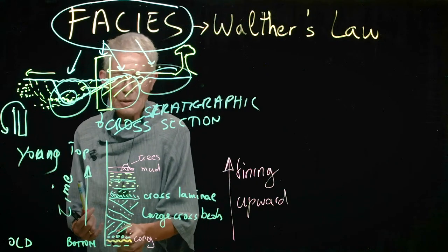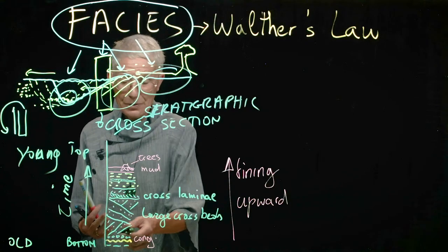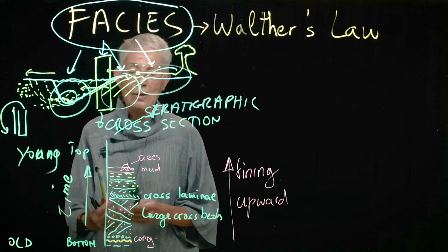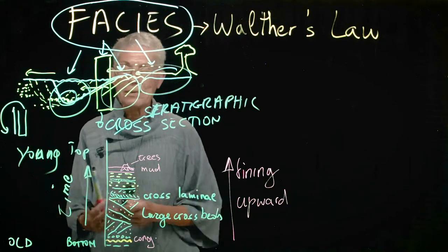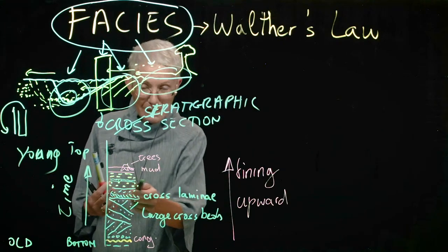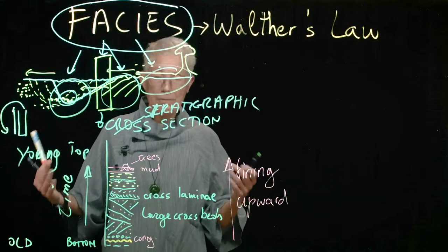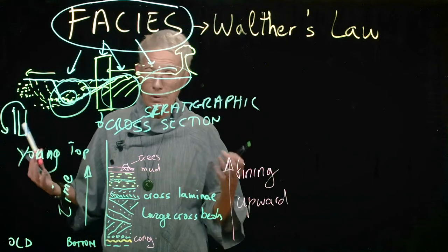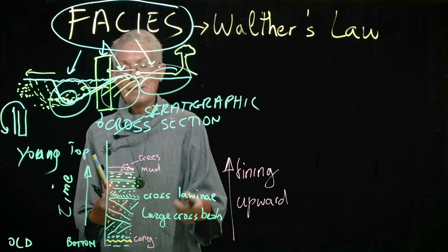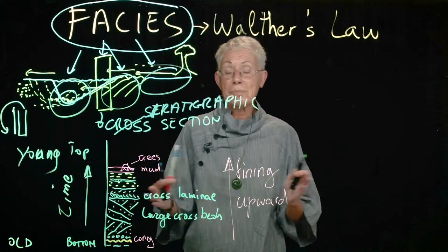So each of these facies, the conglomerate with erosional base, the cross-bedded, large cross-bedded coarse sand, the fine cross-bedded, cross-laminated sand, and maybe a little bit of parallel lamination in silt and mud with fossil trees or stumps or coal, even, is fining upward sequence is representative of a meandering river system that has migrated.